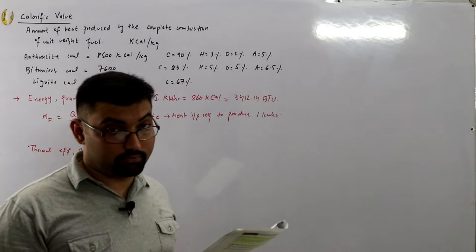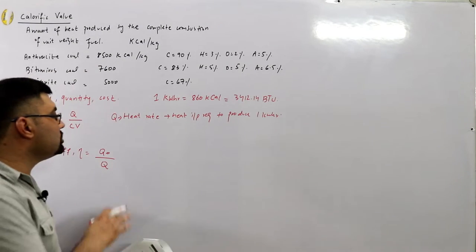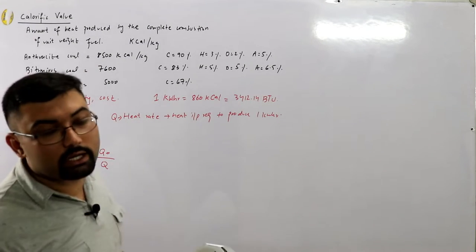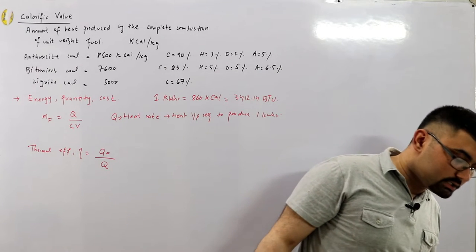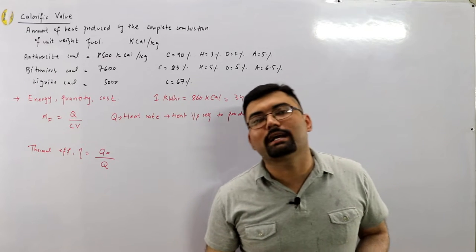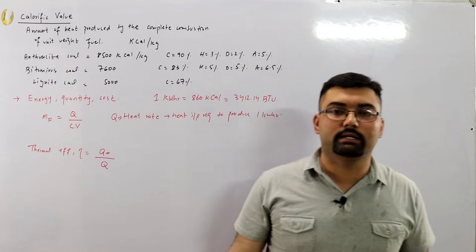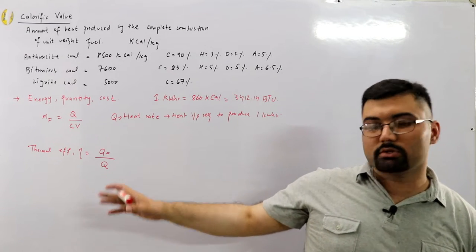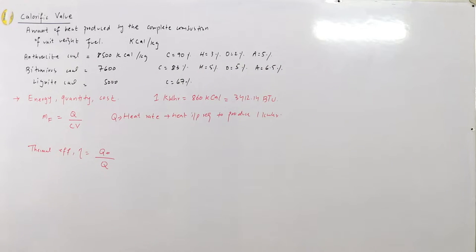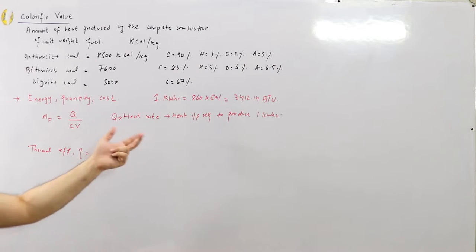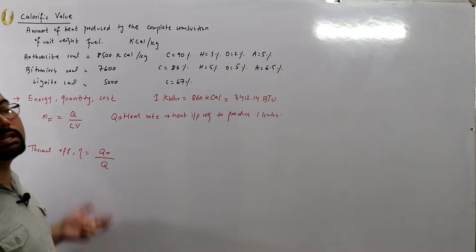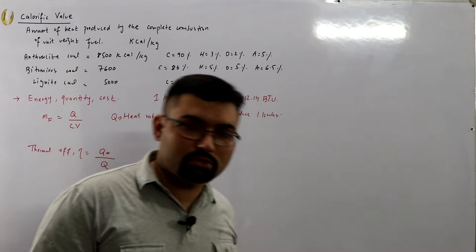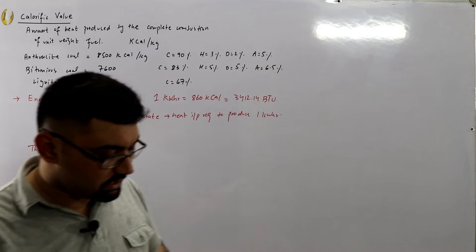Since the energy output of a thermal power station is in electrical units (kilowatt hours), the heat energy output Q₀ must be converted to equivalent heat energy units. The heat rate Q is in heat units like joules, while Q₀ is in electrical units, so the necessary conversions must be made.